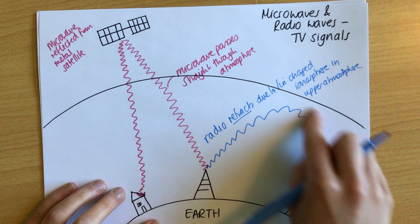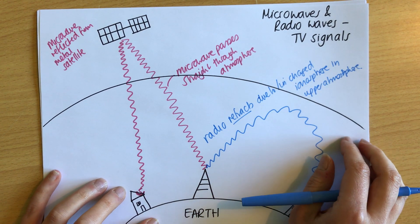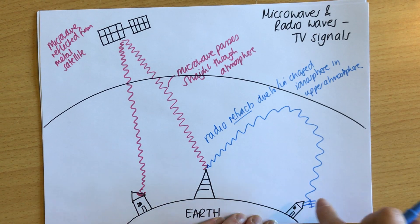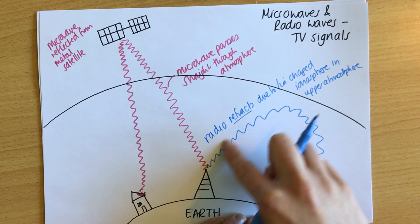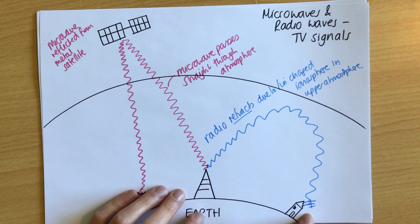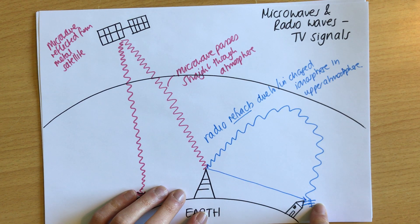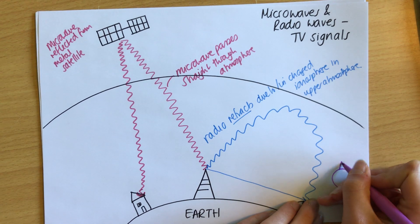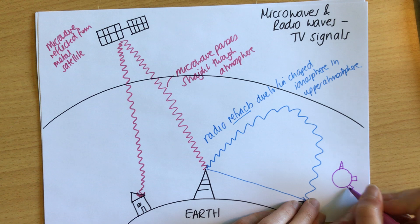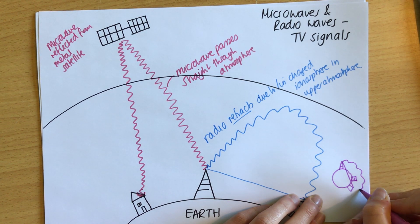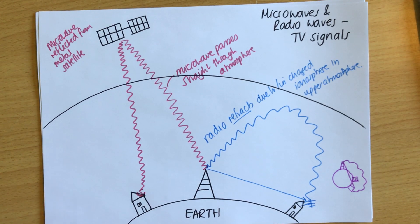Some radio waves also reflect rather than bending. For the Edexcel specification, the refraction is the key behaviour to discuss. This refraction is actually quite useful — because the radio wave bends around, the aerial and receiver don't need to be in the line of sight of each other. For example, a signal could go over the curvature of the Earth to a house that would otherwise be blocked. Because radio waves refract around the atmosphere, they can reach receivers that aren't directly in line with the transmitter.